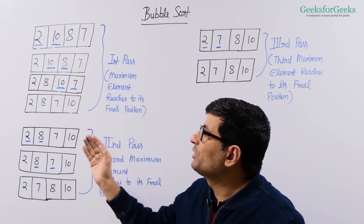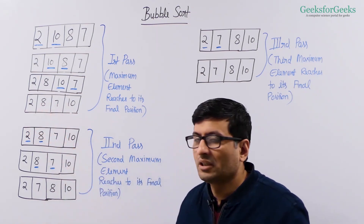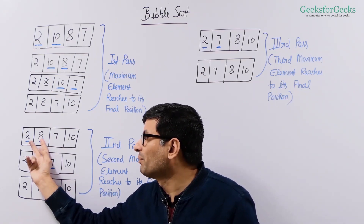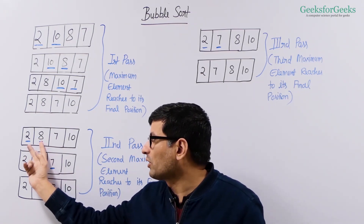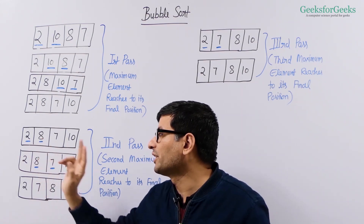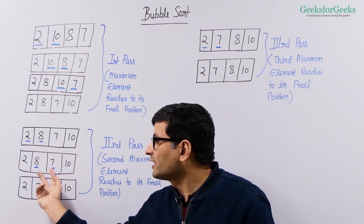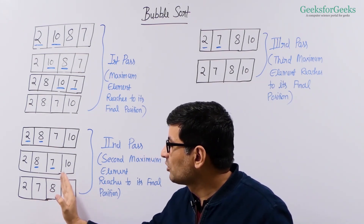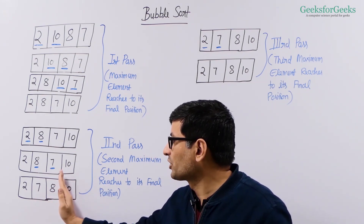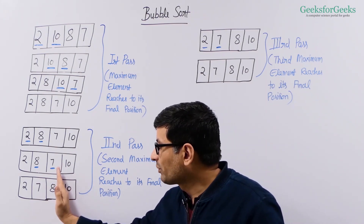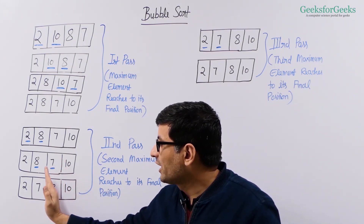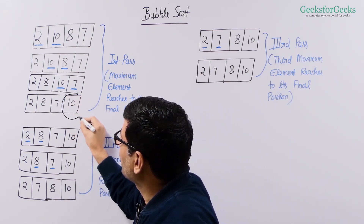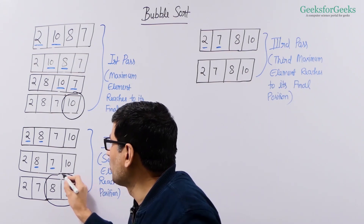Now you want to move the second largest element, 8, to the last position. So we again follow the same concept. We begin with the first two elements, compare them, and if they are out of order, we swap them. They are not out of order here — 2 is smaller, 8 is greater. Now we compare the next two elements, 8 and 7. They are out of order, so we swap them. We stop at this point because there is no point comparing 8 and 10, since 10 was the largest element. So we stop our iteration here and now our two elements are fixed. Before this point only 10 was sorted, and after this pass, 10 and 8 both are sorted.